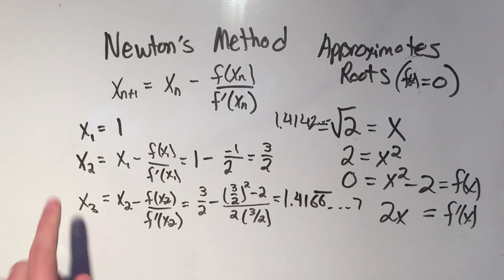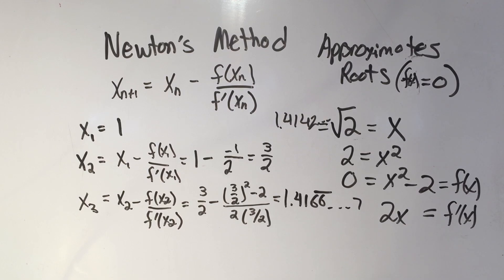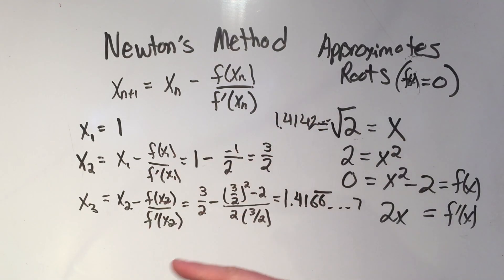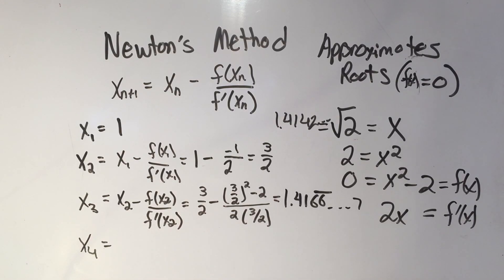Even just three iterations of Newton's method got us pretty close — we're within two thousandths of the right answer. And that might be good enough. If we did x4 and plugged this number into Newton's method formula, we would get even closer. If you do this many, many times, your answer will approach the exact value.